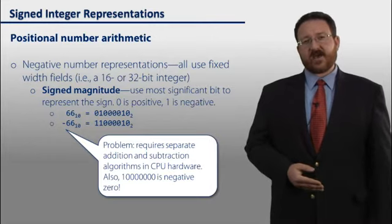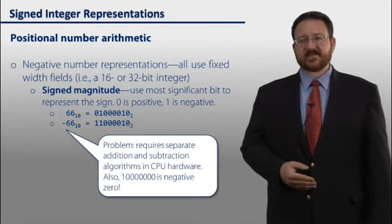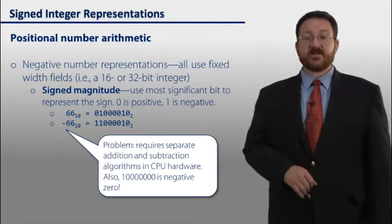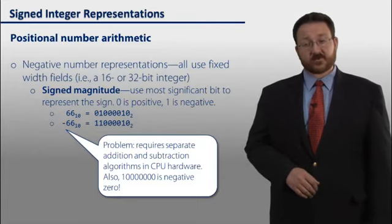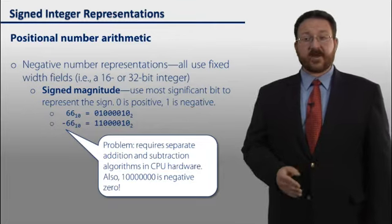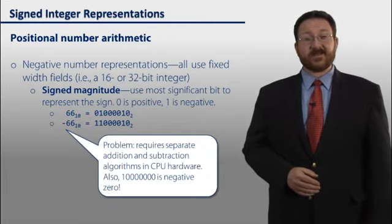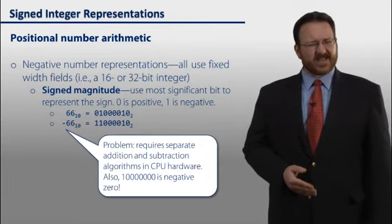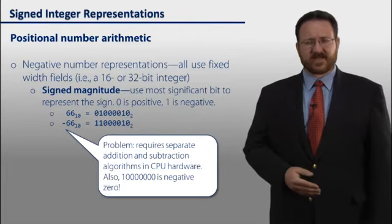The problem that we have with this kind of a representation is that it requires additional hardware in the CPU to perform the subtraction. Also, this number here, 1 followed by all 0s, is actually a negative 0. And so that's a problem. We're wasting a number and it complicates our hardware.